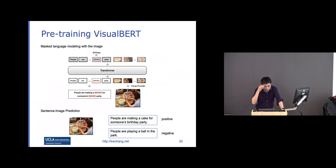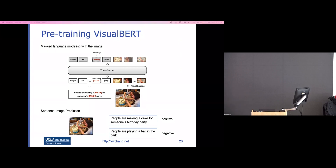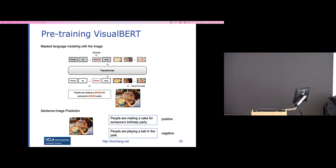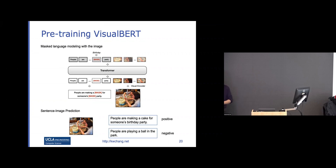More specifically, we feed text as usual token embeddings into a transformer, and from the image side we use a visual encoder — initially a VGG network, later replaced with stronger encoders. We identify objects and put them as visual tokens into the transformer so the model can learn cross-modal relations. Besides the masked language model loss, we also train the model to decide which caption is more related to the image — this loss is similar to the contrastive loss used in the CLIP model.